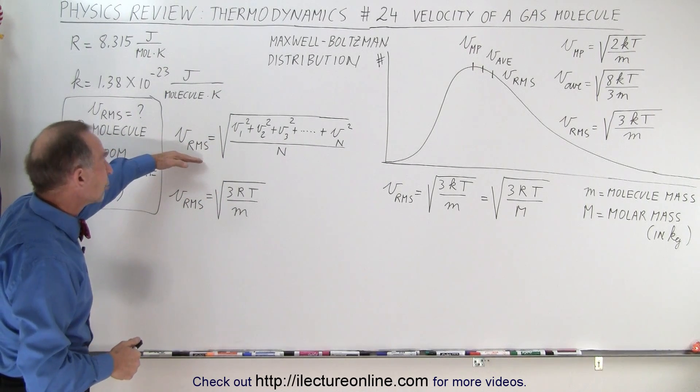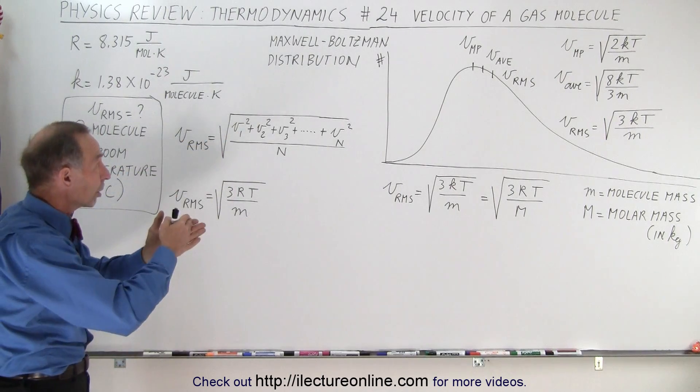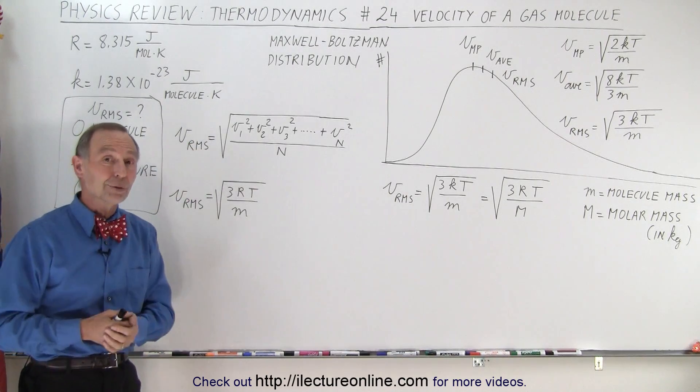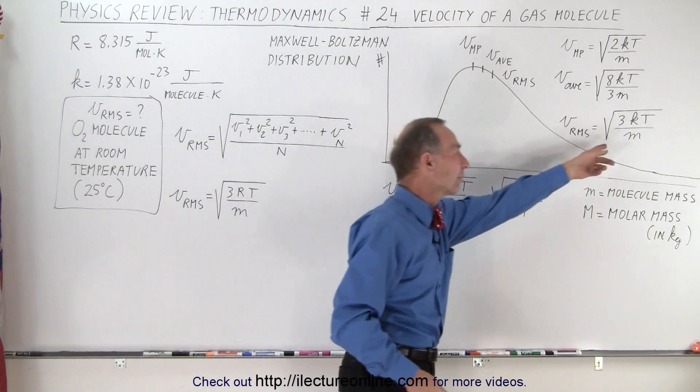So this is how you calculate root mean square. You take each velocity for each molecule, square it, sum them all up, then divide by the number of molecules and take the square root. But of course, you're not going to do that with gazillions of molecules, so you take the equation that makes it very simple.